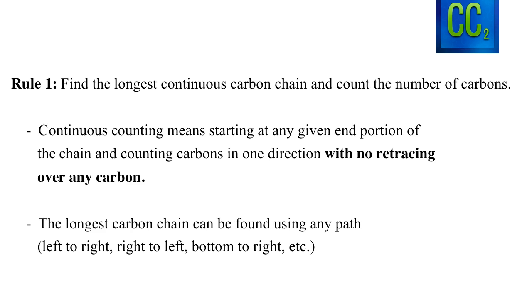First, the continuous counting means that you are starting at one end, and when you're going through the chain and counting those carbons, you cannot retrace or go back over any carbon. It's similar to activities where you put a pencil on paper and you have to draw through a maze without backtracking or crossing back over the mark you've already made. You cannot, when you're moving along the carbon chain, go back over or recount any carbon.